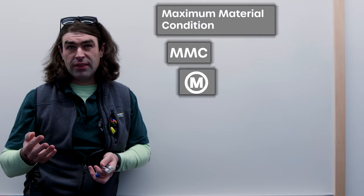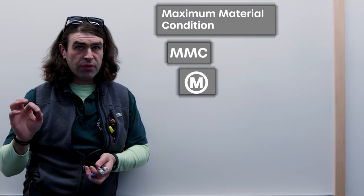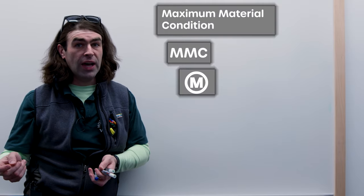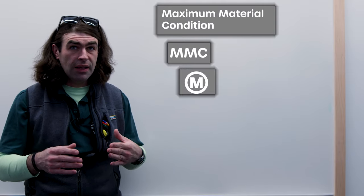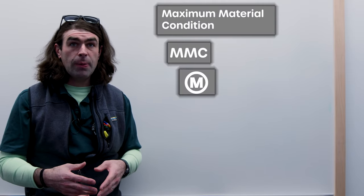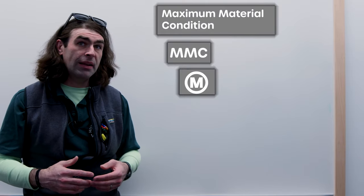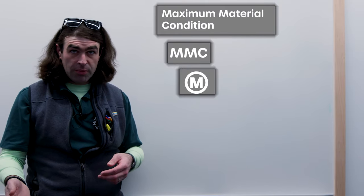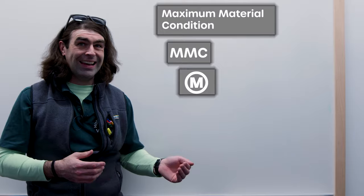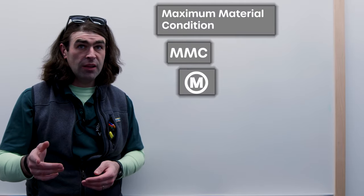It's used in three different places, as I've discussed. The first is when we're talking about limits of size. When we use limits of size, our limits - we're going to have an upper limit and a lower limit. One of them will be the MMC and one of them will be the LMC. Let me show you what I mean.